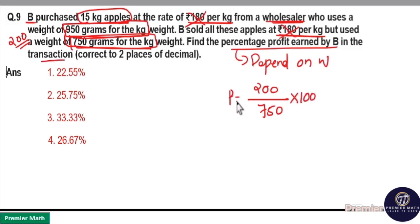Now if you convert it into percentage, profit equals 200 over 750 times 100. 25 goes 3 times in 75, 4 times in 100. 80 by 3 means 3 goes 2 times in 6, 6 times in 18. Again 6 times in 18. So 26.67% is option 4, your answer.